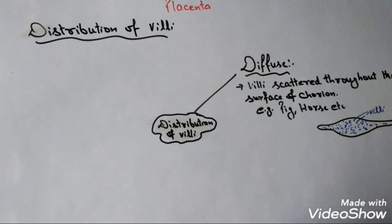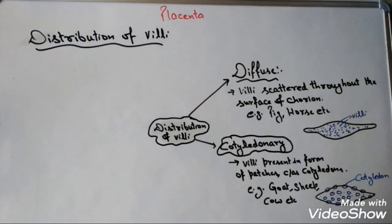Based on the distribution of villi, the placenta has been divided into different types. First is diffuse type, where the villi are scattered throughout the surface of the chorion — for example, pig and horse. The villi are distributed throughout the placenta. The second type based on distribution of villi is cotyledon type, where the villi although present on the placenta are confined in the form of patches called cotyledons. This type is found in goat, sheep, and cow.